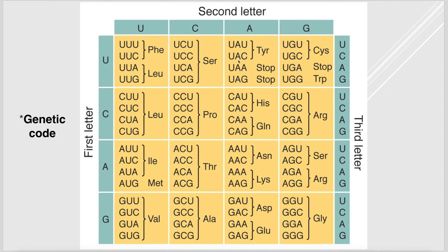Molecular machines read three bases at a time. During translation, which occurs in the ribosomes, the ribosomes read codons — for example, UUU codes for the amino acid phenylalanine. This continues until eventually you get a protein.